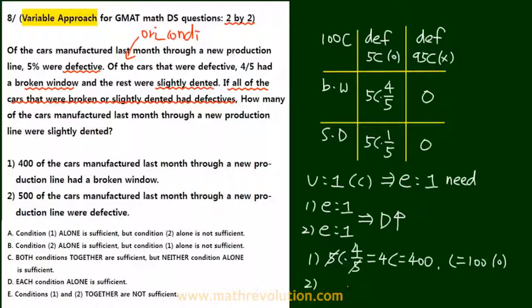What about condition 2? 5c is equal to 500, so again c is equal to 100 and it's sufficient. That's why d is going to be the answer.